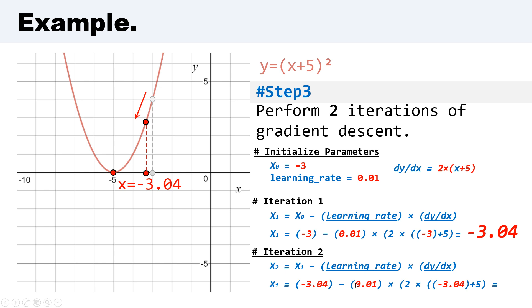Minus learning rate 0.01 multiplied by 2 multiplied by (-3.04 + 5). We have the second point in x-axis by step of 0.01 and we have -3.0792.